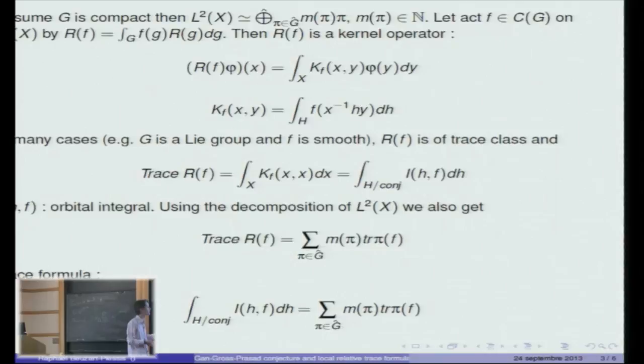In fact this operator is a kernel operator, meaning that if you take R of phi and evaluate that at X, it is the integral over X of some function of two variables, the kernel KF of X, Y against phi Y dY. In many cases, for example if G is a Lie group and F is smooth, then R of F is of trace class, which means that it has trace. We can compute the trace by taking the integral over the diagonal of the kernel. We can easily, by just switching two integrals, rewrite the right hand side as an integral over the space of conjugacy classes in H of something called orbital integral IHF.